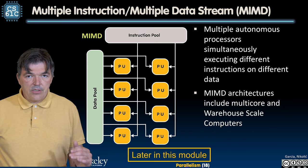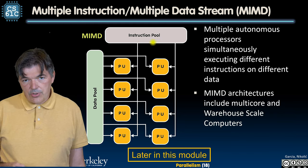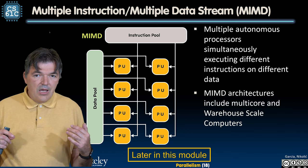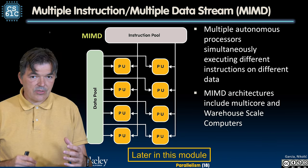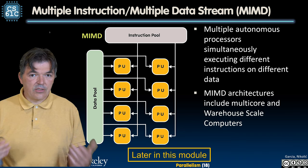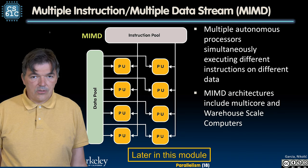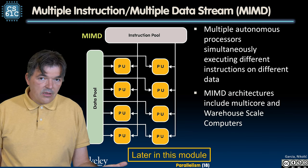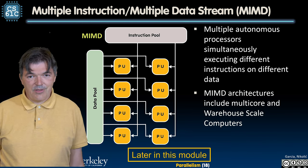The third type is MIMD — Multiple Instructions Multiple Data streams. Multiple instructions are issued simultaneously, each operating on multiple data. This is generally not just one processor; it is a concept of multiple processors, where each one is a SIMD processor operating concurrently, each issuing its own instruction that runs on multiple data. MIMD architectures will be covered later in this module and involve multi-core processors, data centers, and what we call warehouse scale computers, where many computers are housed in the same building.